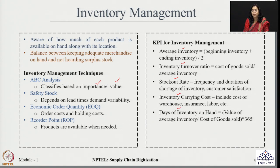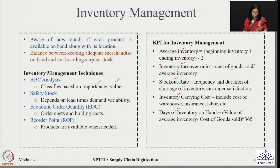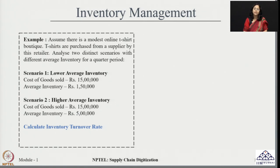These are some of the important KPIs for inventory management, though this is just a brief list. Different industries have their own KPIs to ensure that products are managed efficiently. Let us see a quick example of how these KPIs are calculated. We will consider an online t-shirt boutique selling t-shirts purchased from a supplier, with two distinct scenarios having different average inventory for a quarter period, and analyze these two scenarios to find the right inventory policy.